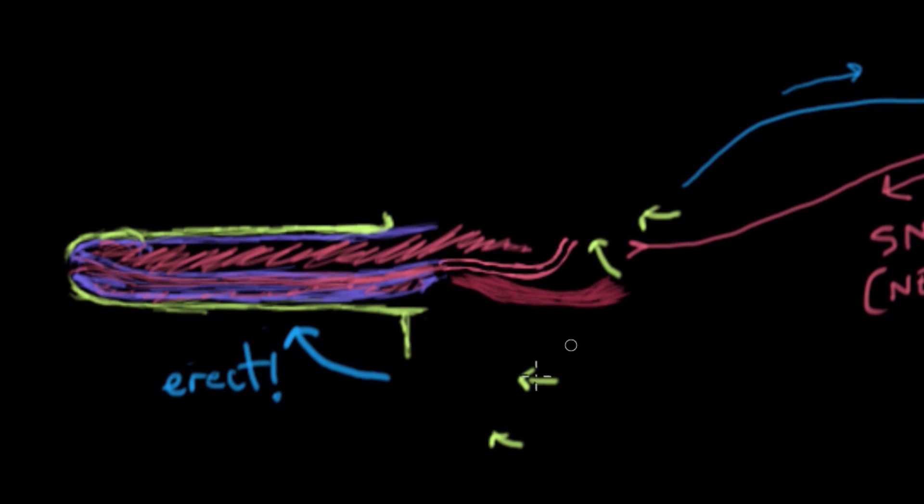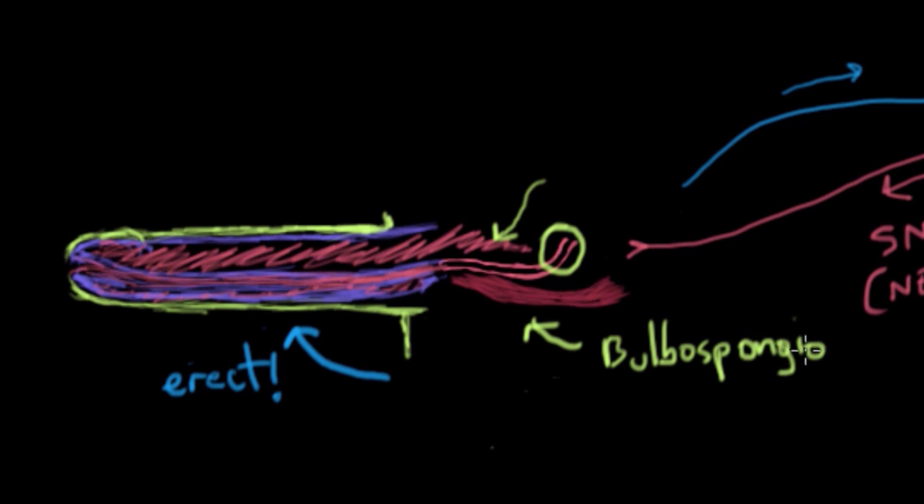Now in the second phase, the semen is now sitting here at the beginning part of the urethra. The smooth muscle of the urethra itself, all along its length, and this muscle at the base of the penis, called the bulbospongiosus muscle, they then contract and expel the semen from the urethra out of the tip of the urethra, called the meatus. That's basically the process of ejaculation.